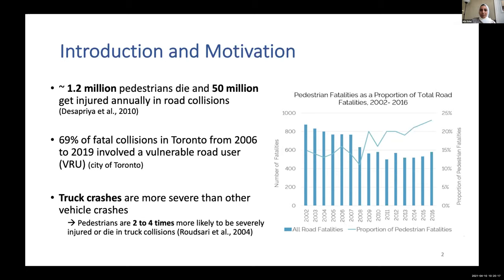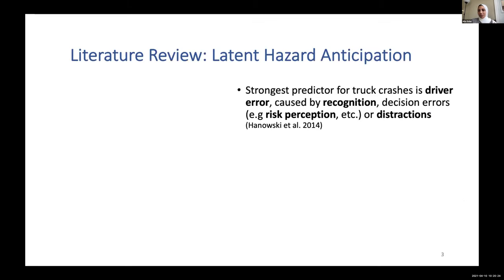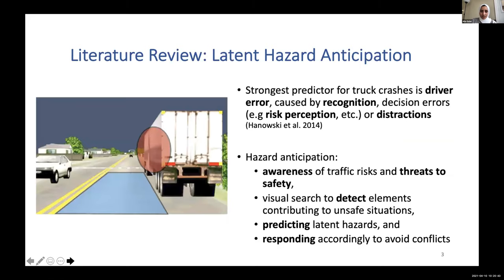After extensive literature review, we concluded that the strongest predictor for truck crashes is driver error, which can be caused by recognition errors, decision errors, or distractions. We decided to focus on a specific skill in truck drivers: hazard anticipation. This consists of four main steps: awareness of traffic risks, visual search to detect unsafe elements, predicting that latent hazards might happen, and responding in a timely manner to avoid conflicts.